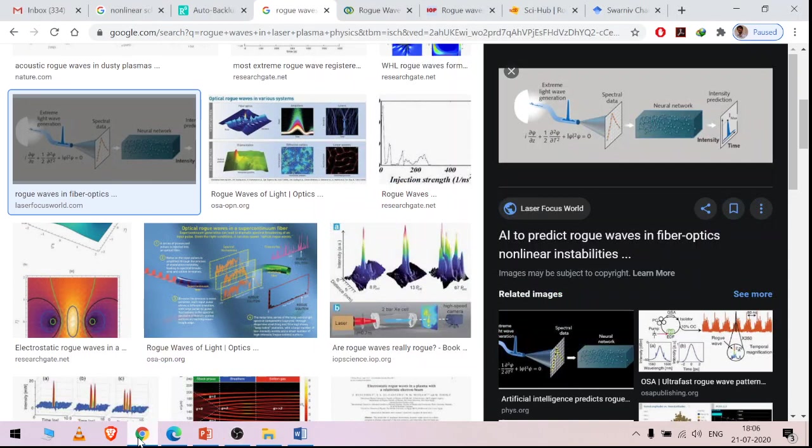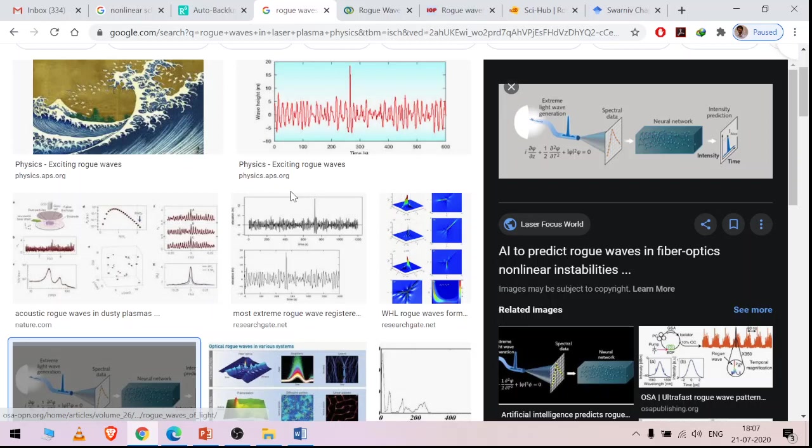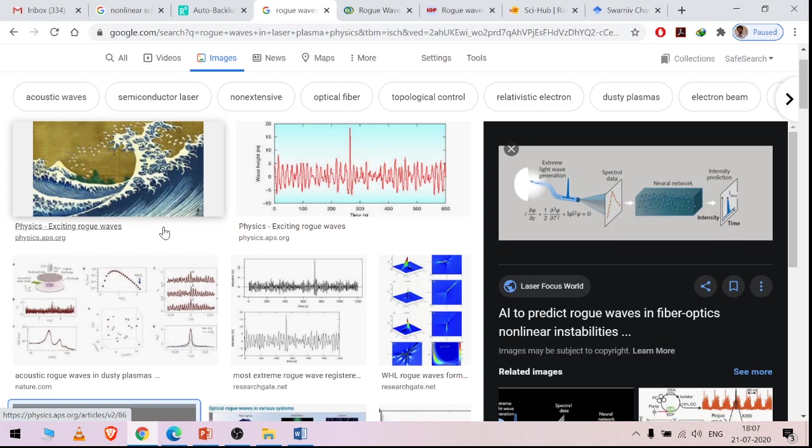Good evening everyone. Today we are going to learn something new that I promised you regarding the investigation of rogue waves in plasma. Those of you who have already derived the KdV Burgers equation, some of you requested me to extend the study further. So first let me define what are rogue waves. The most common rogue waves are the tsunamis—they are high in amplitude, large, rich in energy, and devastating.